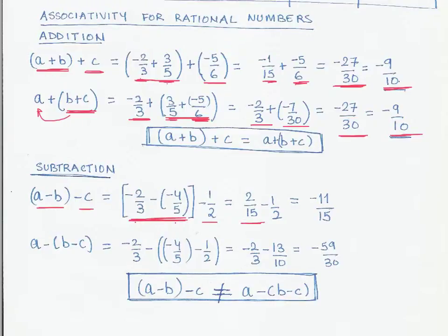And then we have minus one by two. So this is our C. So this is the A minus B part here. And this is C. So this now we are doing A minus B minus C. And when I simplify it, we get minus 11 by 15.